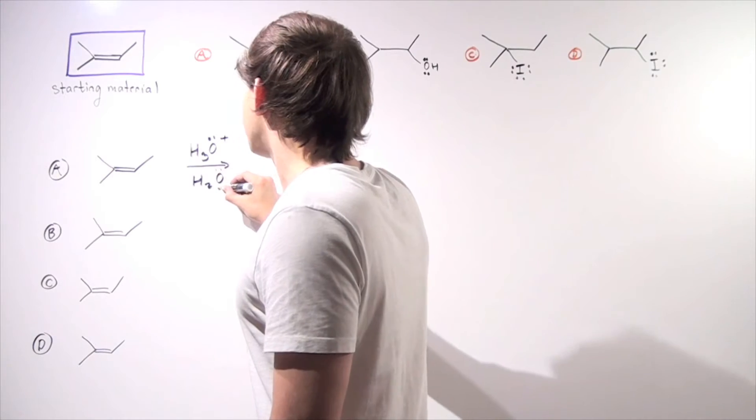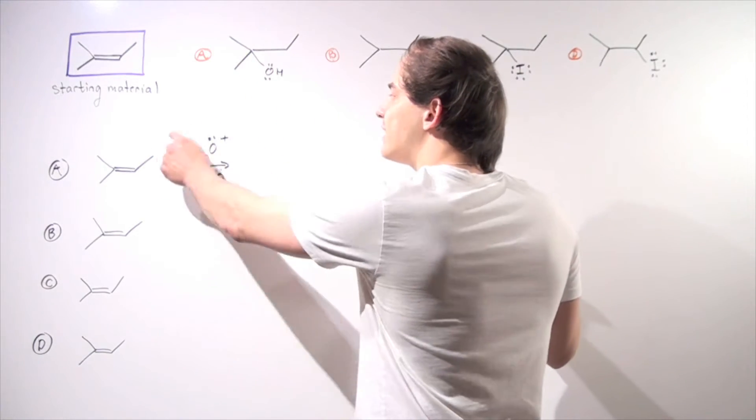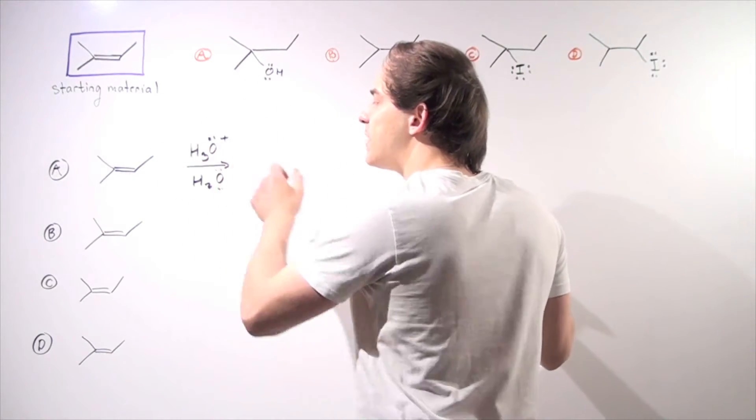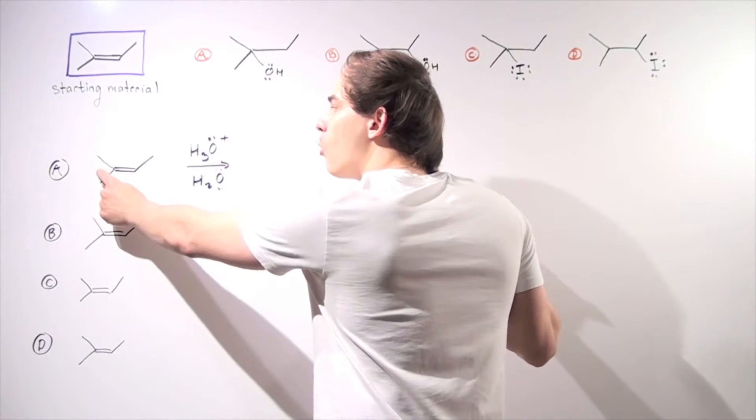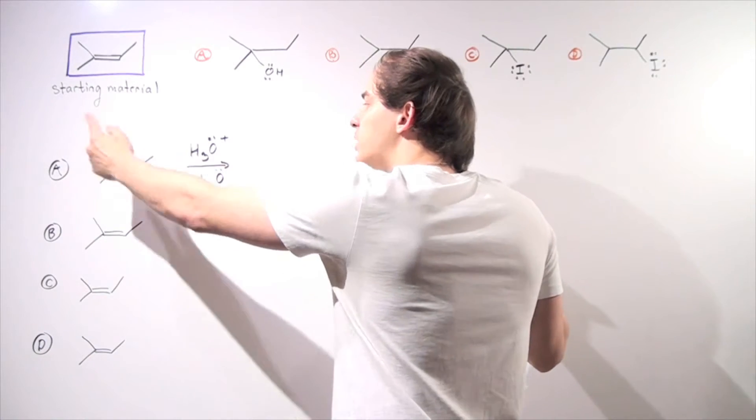So in the first step, this will act as an acid donating that H atom on this side of our carbon producing the more stable tertiary carbocation.